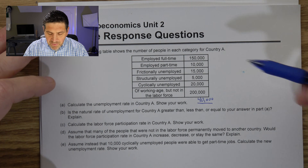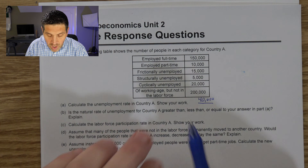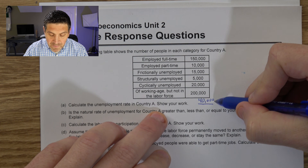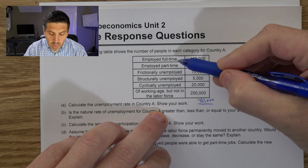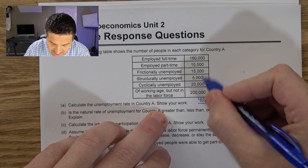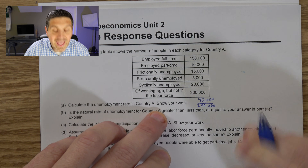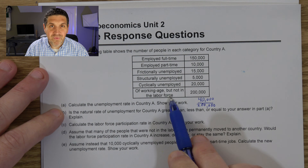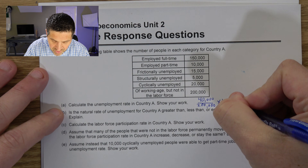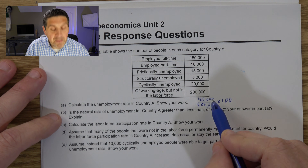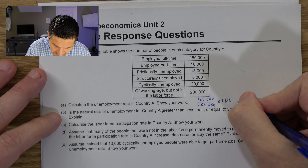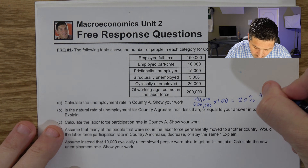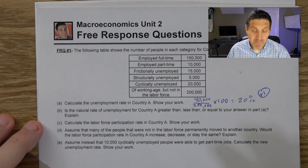We divide the unemployed by the labor force. We're not going to use the 200 because those people aren't in the labor force. The labor force is made up of people who are employed and people who are unemployed — so it's 40,000 plus the additional 160,000 people who are full-time and part-time employed, for a grand total of 200,000 people in the labor force. The equation is: number unemployed divided by number in the labor force times 100. That gives us 40 of 200, which is 20% unemployment.